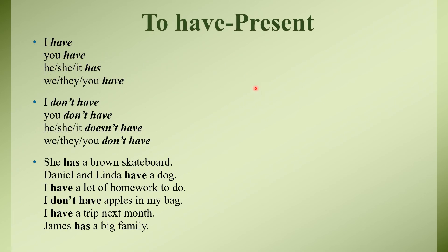To be past form — was and were. For example: 'I was at the school yesterday.' 'You were ten years old last year.' 'Emma and Jane were students, now they are doctors.' 'It wasn't yesterday.' 'Was she present yesterday?' Everywhere we have used was and were, which is the auxiliary verb acting as main verb here. Next, 'to have' — present form have or has. With I and you we use 'have'; with he, she, it we use 'has'; and with we, they, you we use 'have'. For example: 'She has a brown skateboard.' 'Daniel and Linda have a dog.' 'I have a lot of homework to do.'